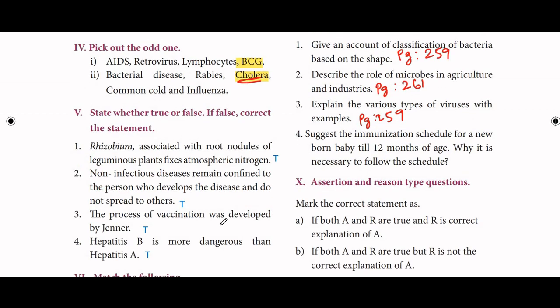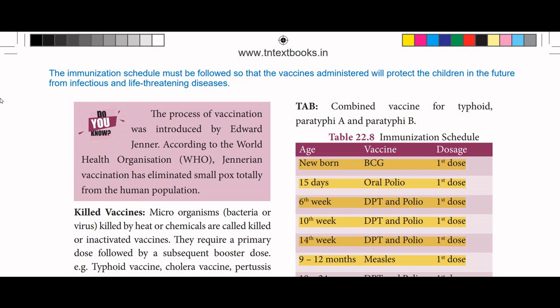Next: suggest the immunization schedule for a newborn baby till 12 months of age, and explain why it is necessary to follow the schedule — from page number 269. The immunization schedule must be followed so that the vaccines administered will protect the children in the future from infectious and life-threatening diseases.